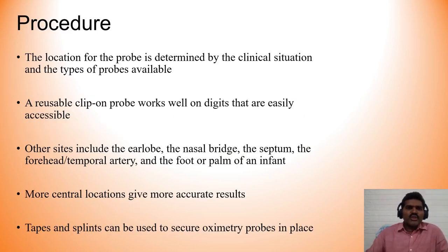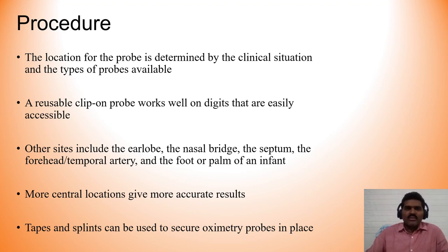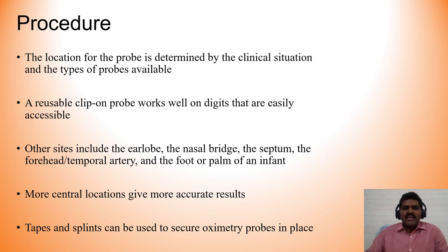Regarding the procedure for obtaining pulse oximetry readings: the probe location is determined by the clinical situation and the type of probe available. A reusable clip works well on easily accessible digits and is the most commonly used. Other sites include the earlobe, nasal bridge, nasal septum, forehead, temporal artery, and the fleshy pad — specialized devices are needed for these sites. More central locations give more accurate results and better reflect central circulation. Tapes and splints can be used to secure oximetry probes in place.